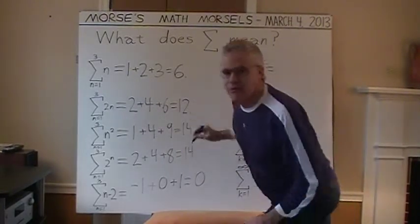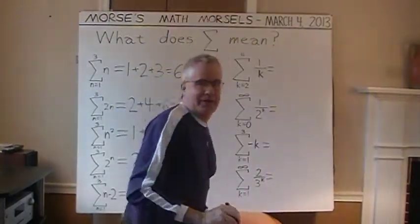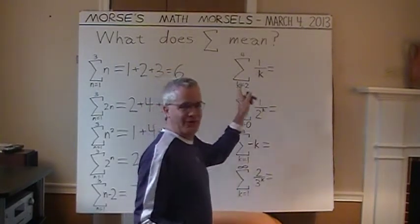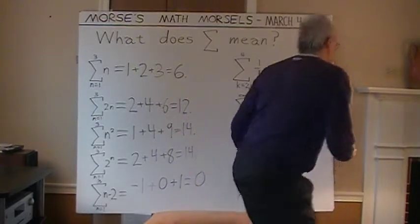And on the right side, we have some examples using K. Another popularly seen letter for a variable with summations. We'll move again to the right side.